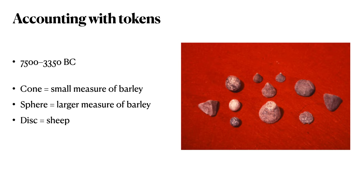Each token in the collection originally represented a unit of some physical commodity. The picture depicts three small cones, which collectively would have represented three small measures of barley — a grain — each cone representing one small measure. Other early tokens depicted include spheres and disks: each sphere represented a larger measure of barley, and each disk represented one sheep.